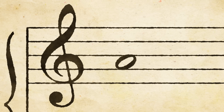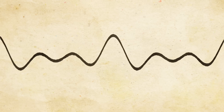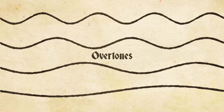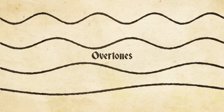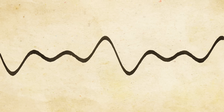Every note we hear is actually a combination of multiple vibrations. Imagine a guitar string vibrating at its lowest frequency — this is called the fundamental, and this low pitch is what our ears mostly use to identify a note. But this lowest vibration triggers additional frequencies called overtones, which layer on top of the fundamental.